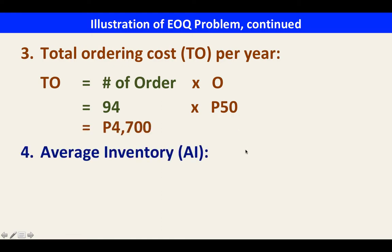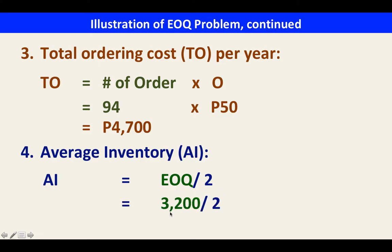The average inventory formula is EOQ divided by 2. With EOQ of 3,200 divided by 2, the average inventory is 1,600 units.